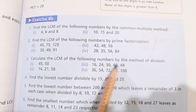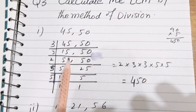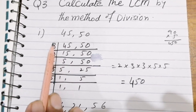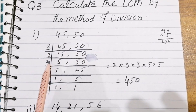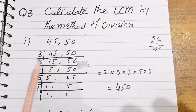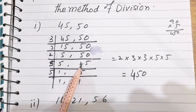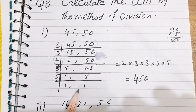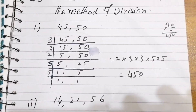Question 3: calculate the LCM by division method. For the first part, 45 and 50 are given. We take these numbers together and divide by suitable numbers — I start with 3. 3 divides 45 to give 15; 50 stays as it is. Continuing dividing by smallest suitable numbers, we get all the factors and multiply them to get the product 450.